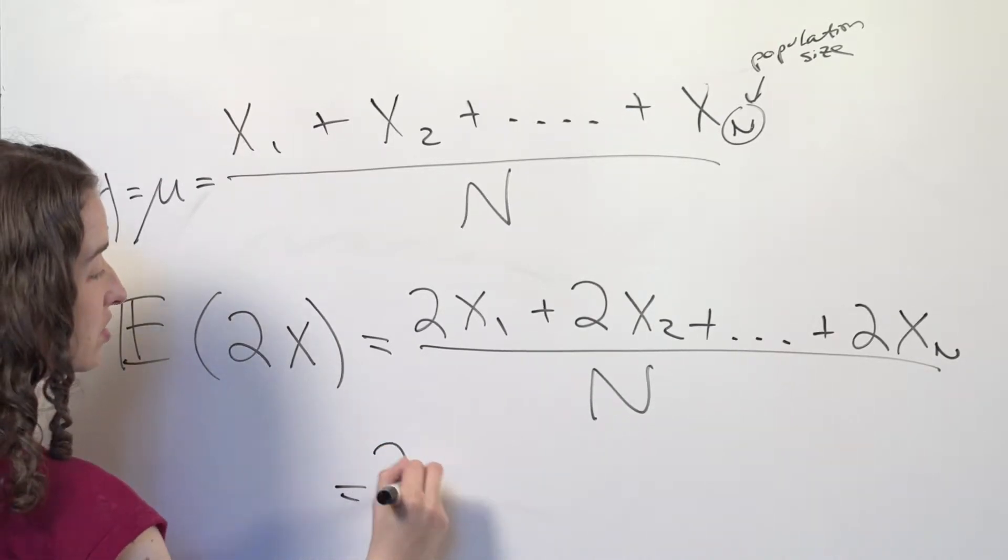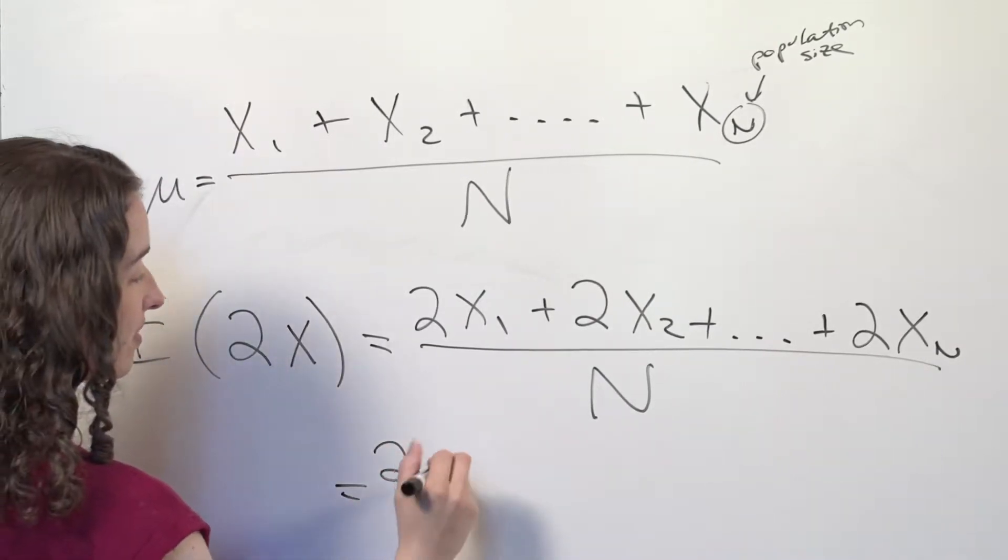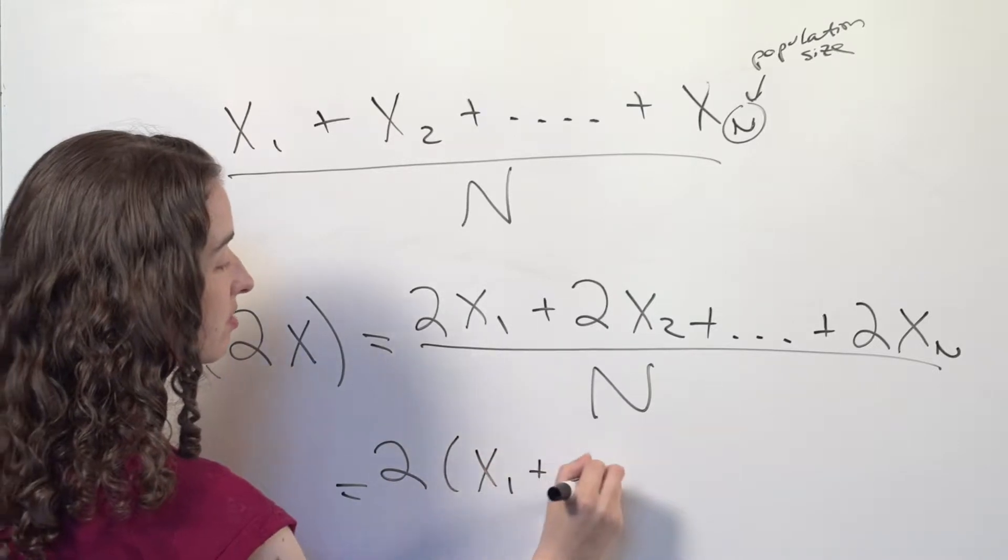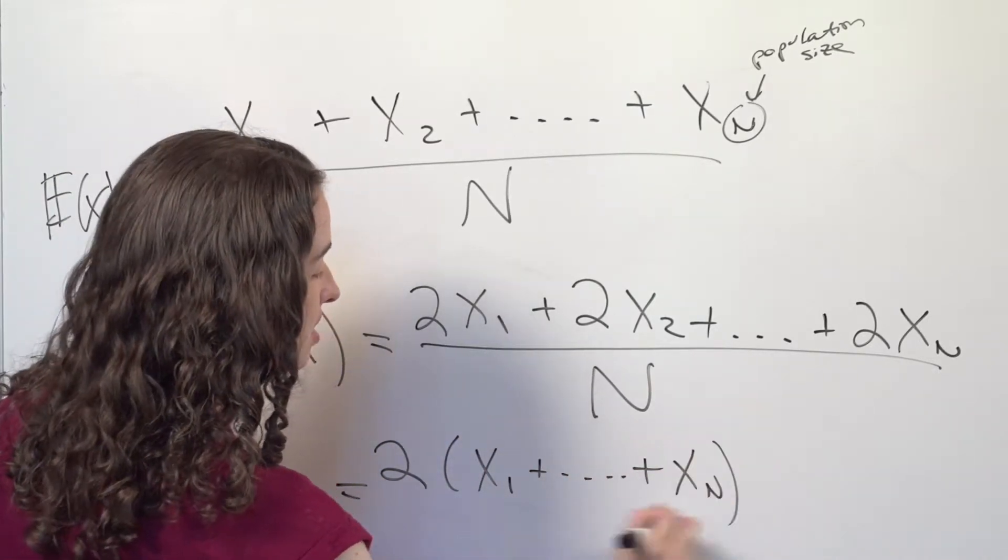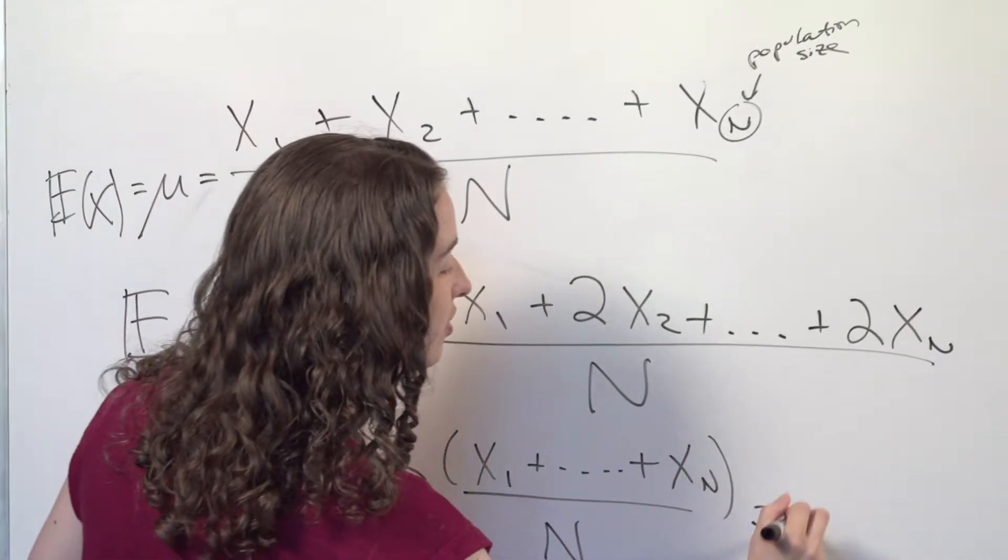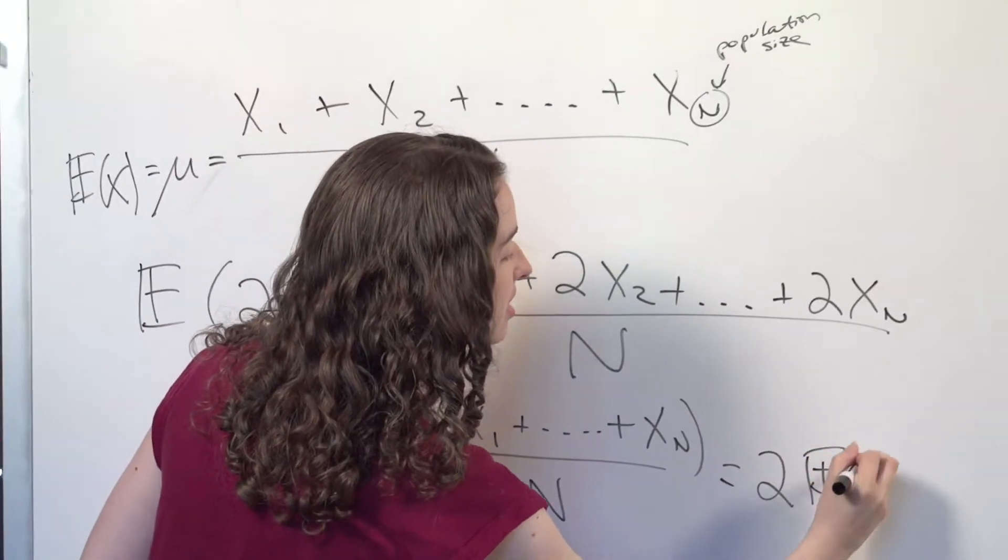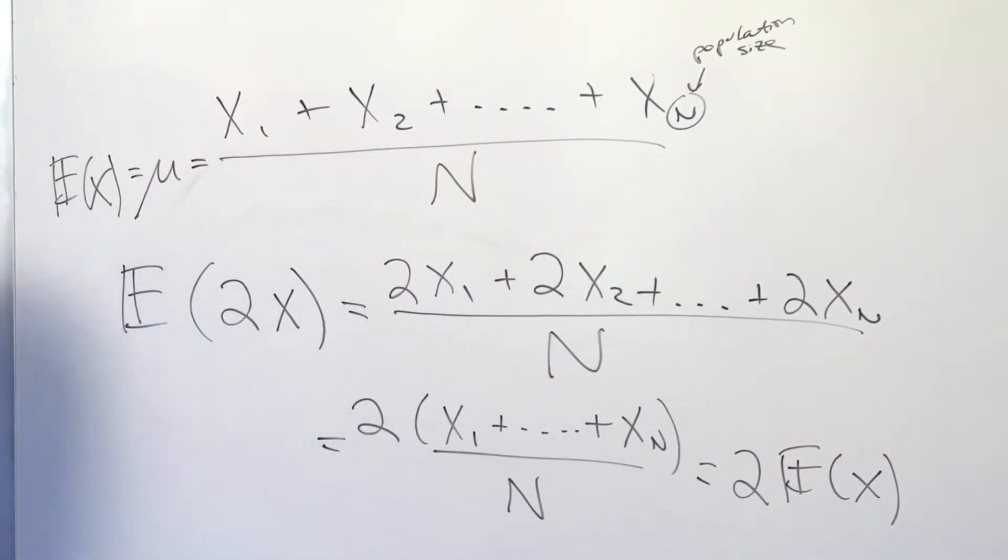And if I factor out this 2, then what I have is 2 times the sum of all the incomes over N, in other words, 2 times the expectation of X. So what did we just illustrate? We illustrated a general property,